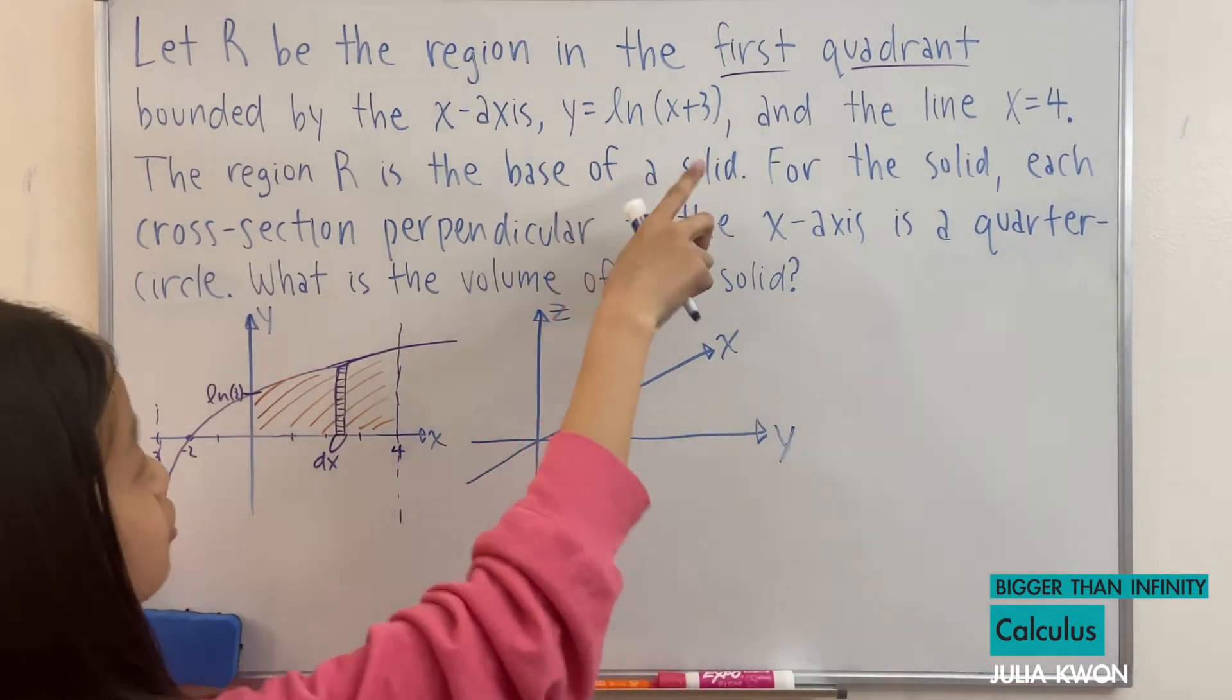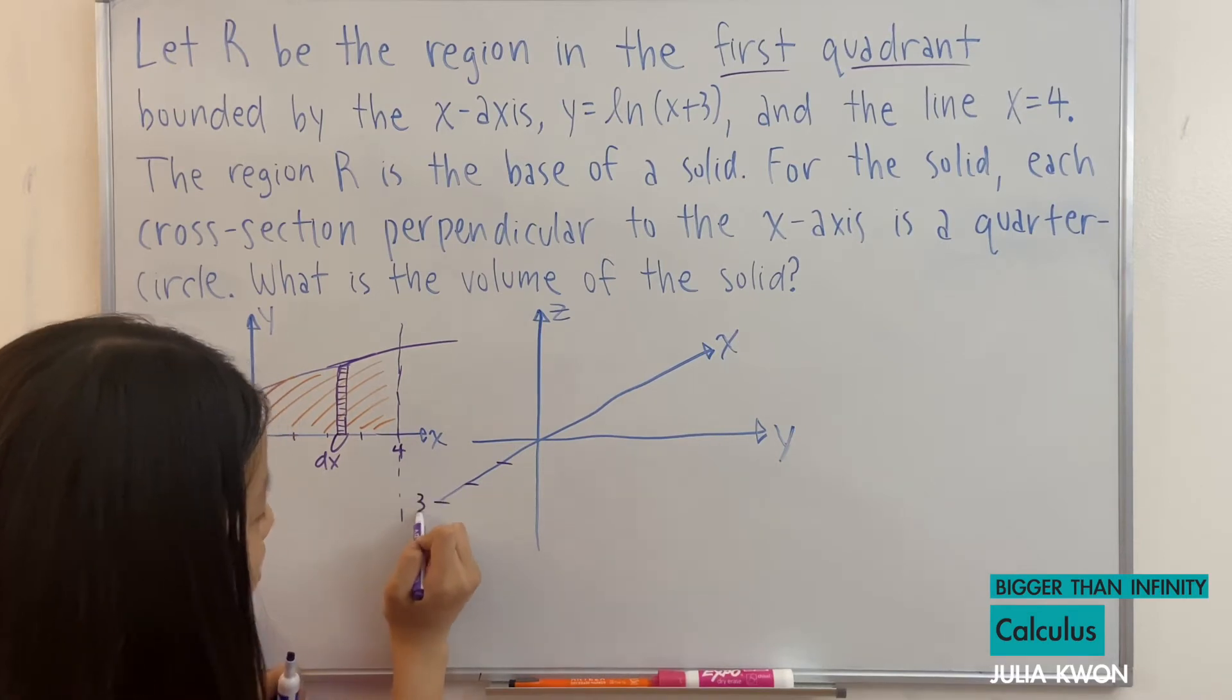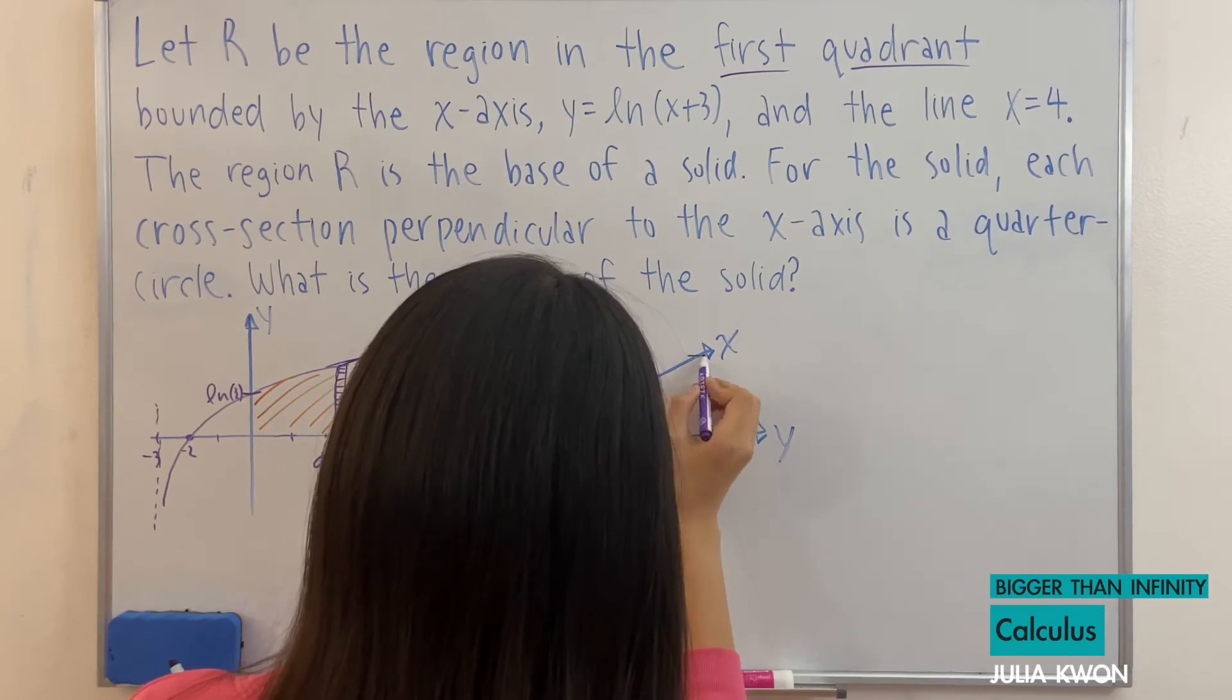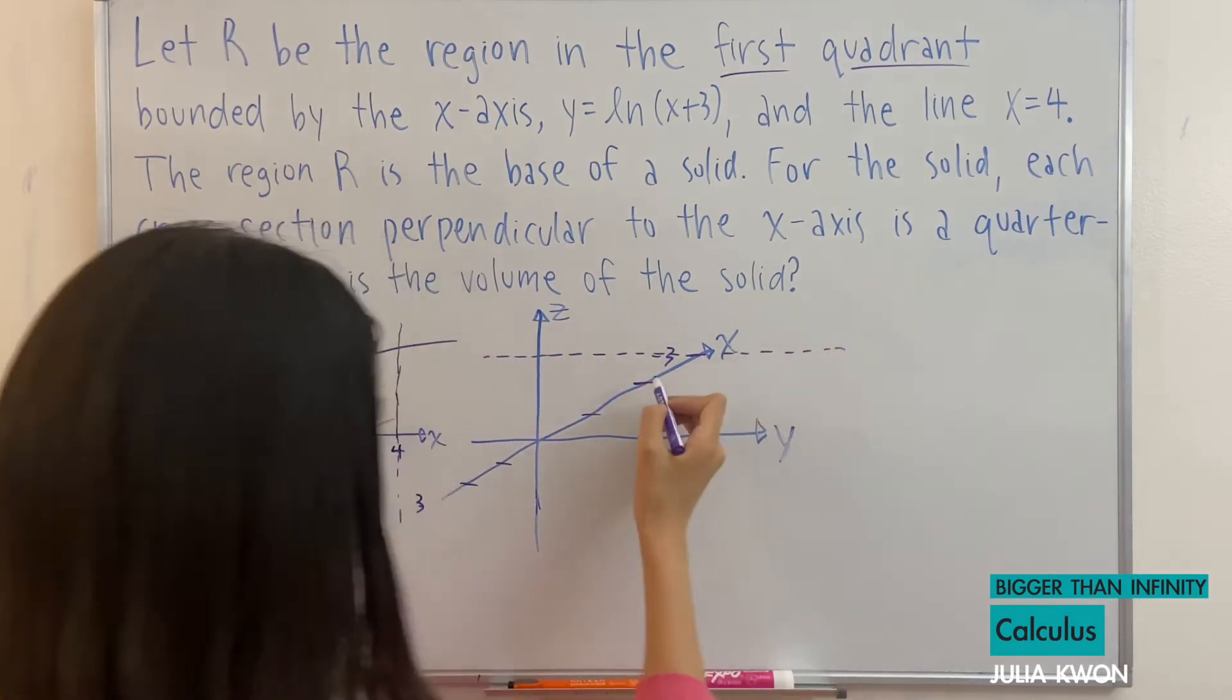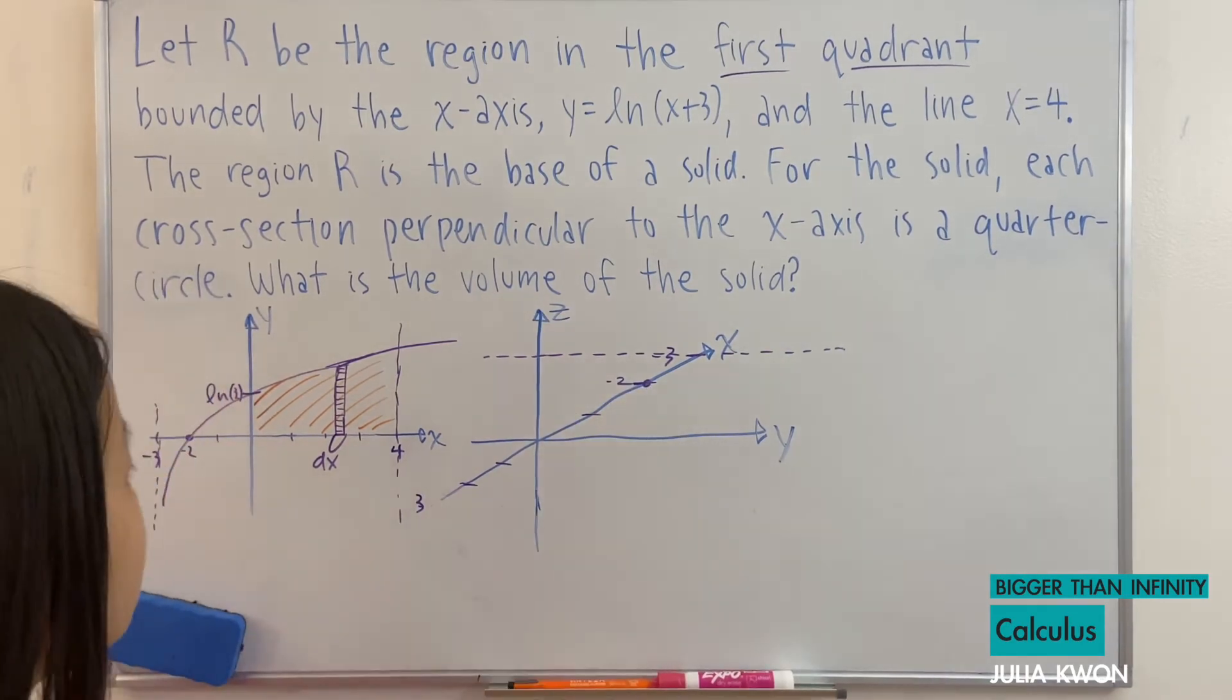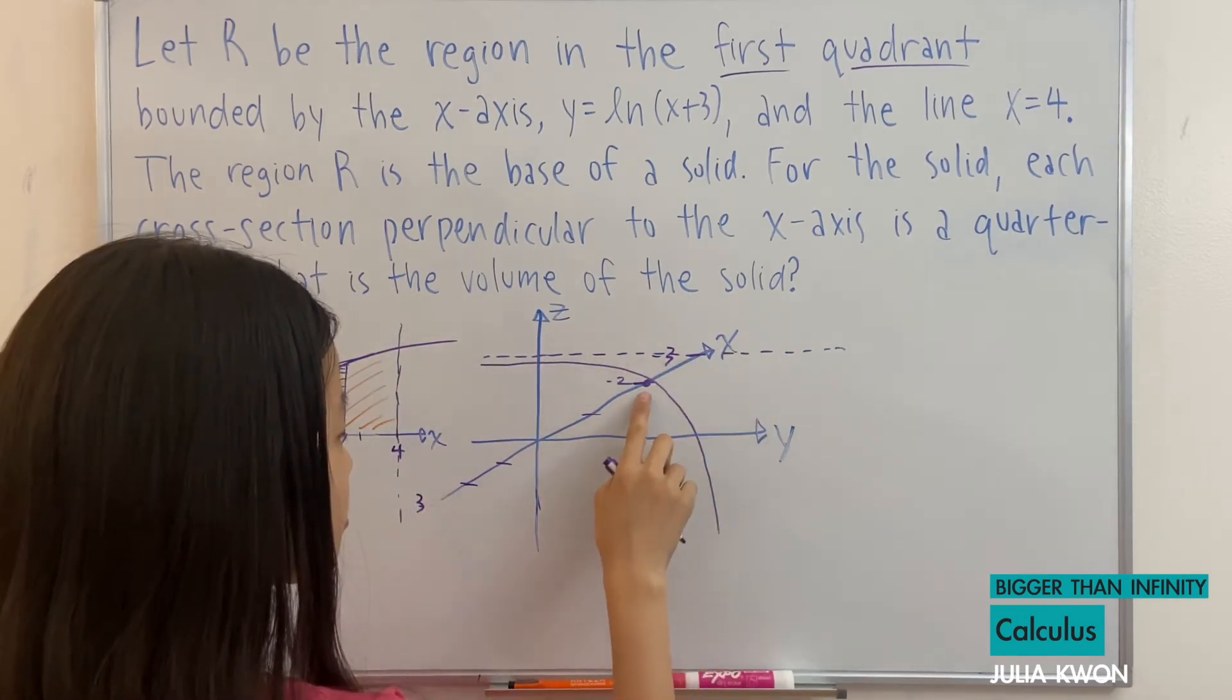So first, let's draw the function y = ln(x+3). Let's say here's 1, 2, 3. And this here is -3. So this would be the line x = -3. And this is -2. So we have a dot here. And so the graph would look like this. And it's supposed to actually pass through this point.